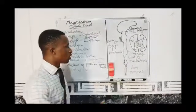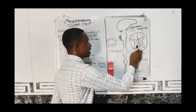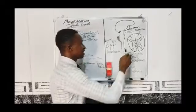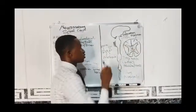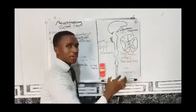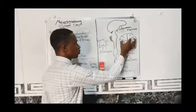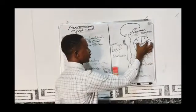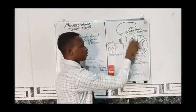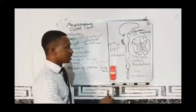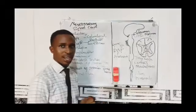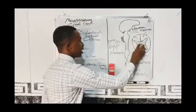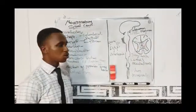The aspects of the grey matter that project laterally are referred to as the grey horns. The anterior projections are called the anterior grey horn, and the posterior projections are called the posterior grey horn. To summarize: anterior grey horn, posterior grey horn, anterior grey commissure, posterior grey commissure, and the central canal or spinal canal.